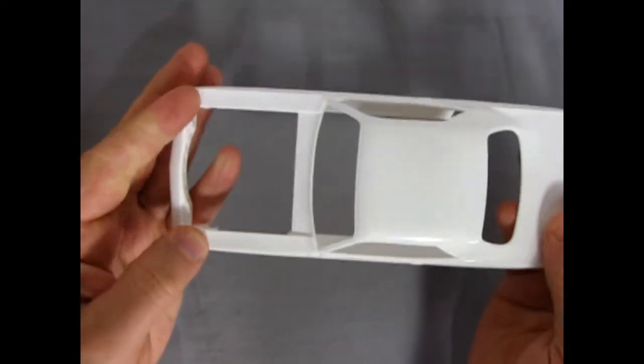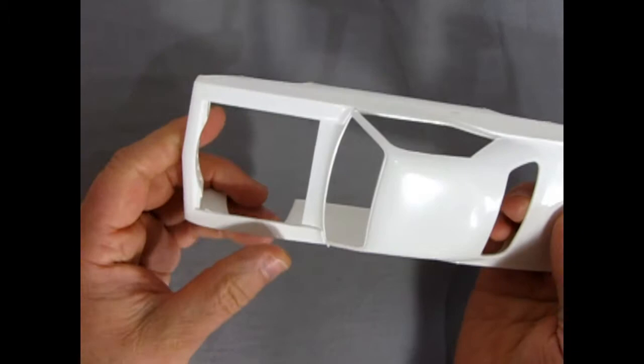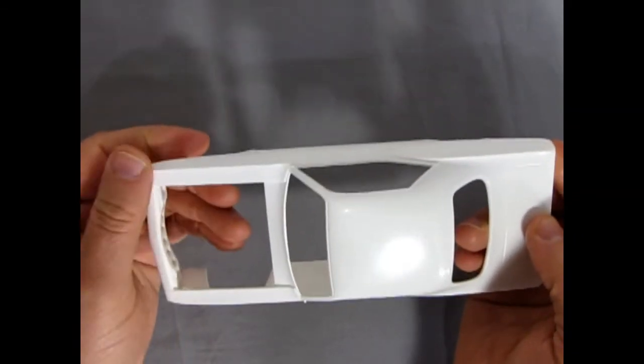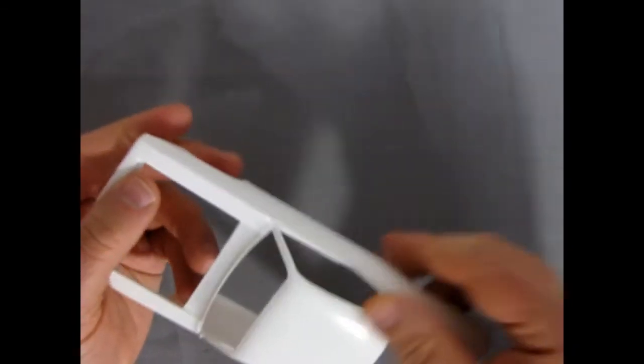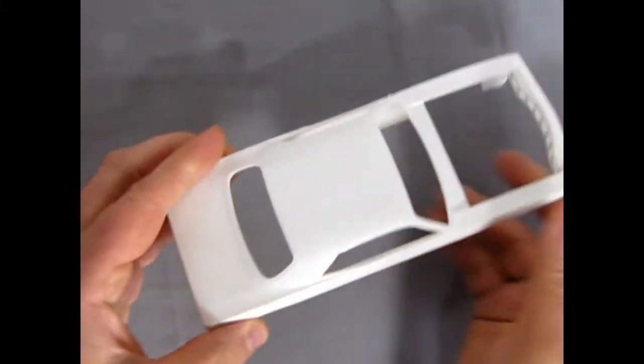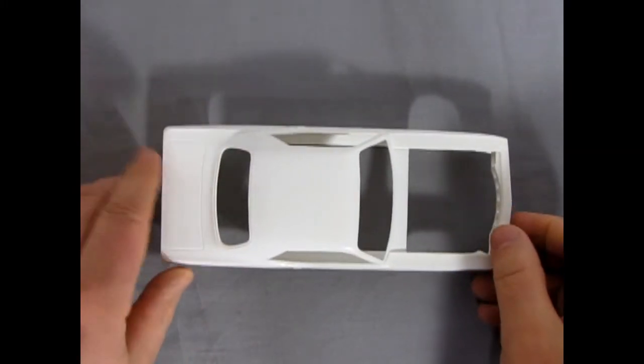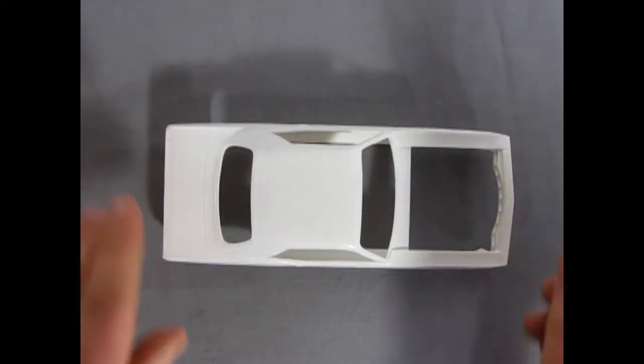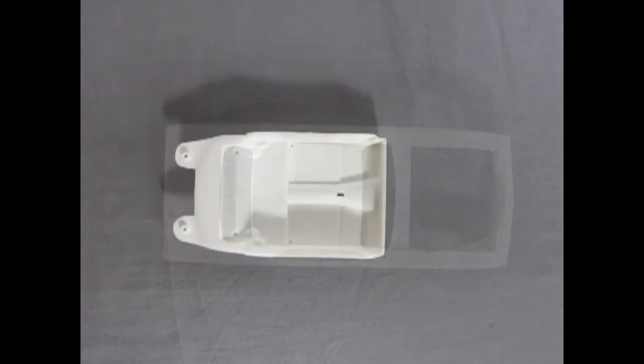Now, there is some flash on here, but again, keep in mind that this kit has been pumped out millions of times. Flash along the top of the, or seam lines along the top of the fenders. But again, I mean, considering the vintage of this thing and the fact that it's a Johan kit, it's amazing.